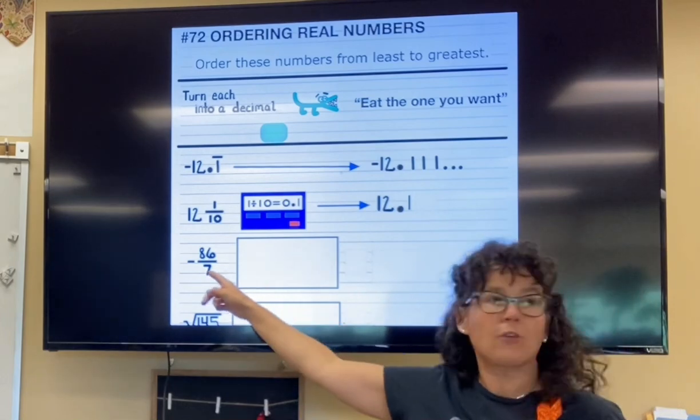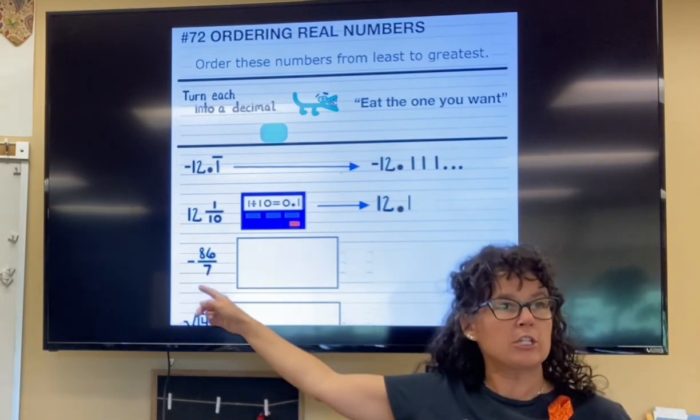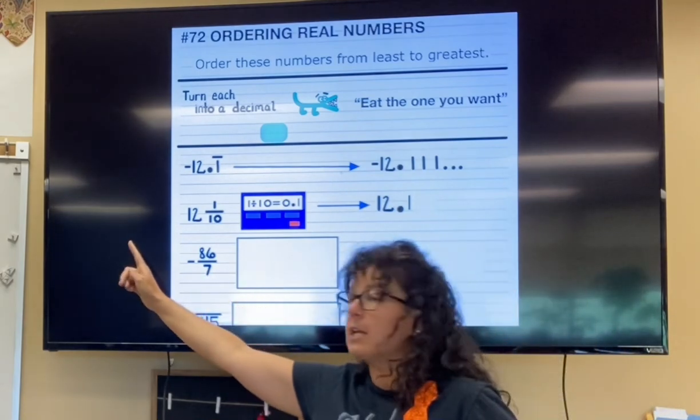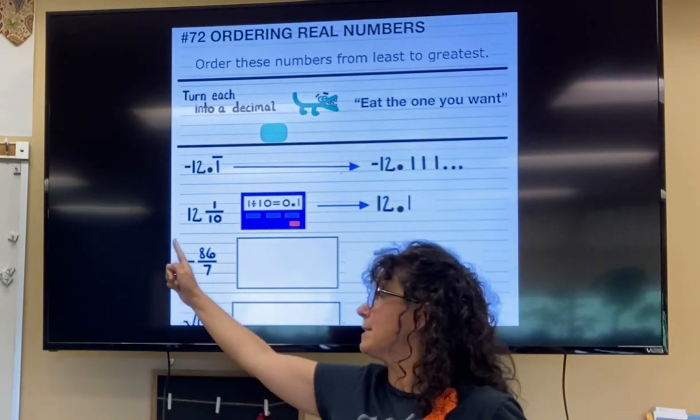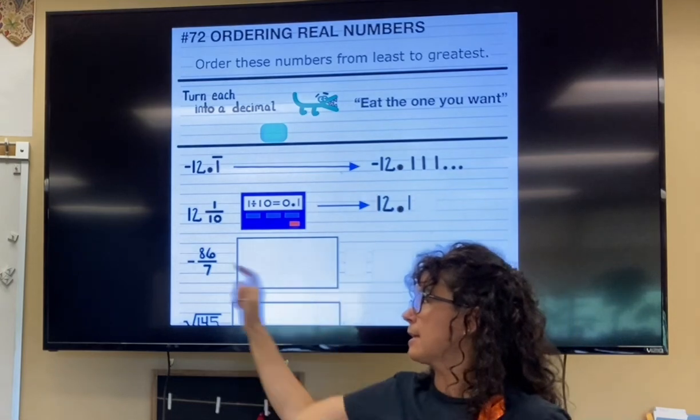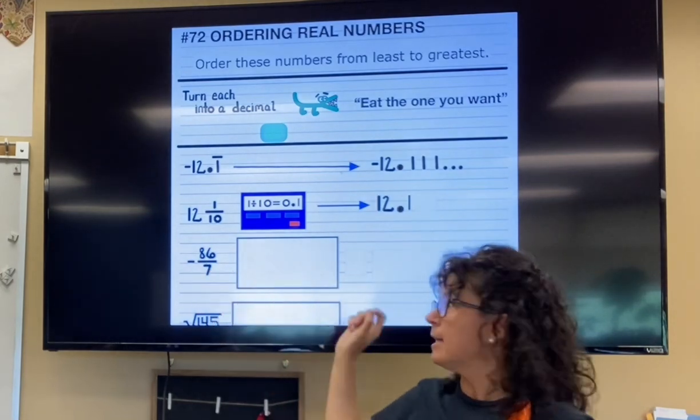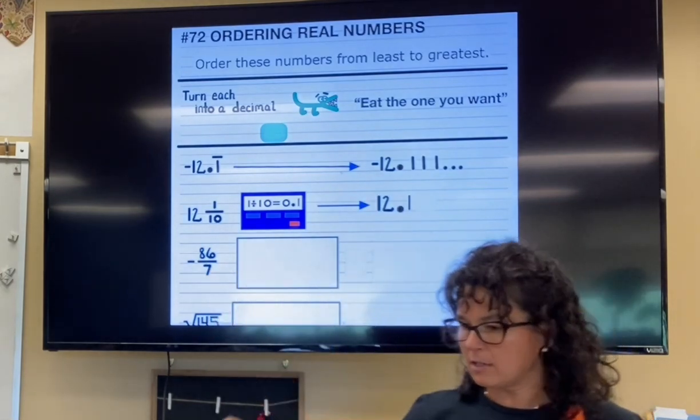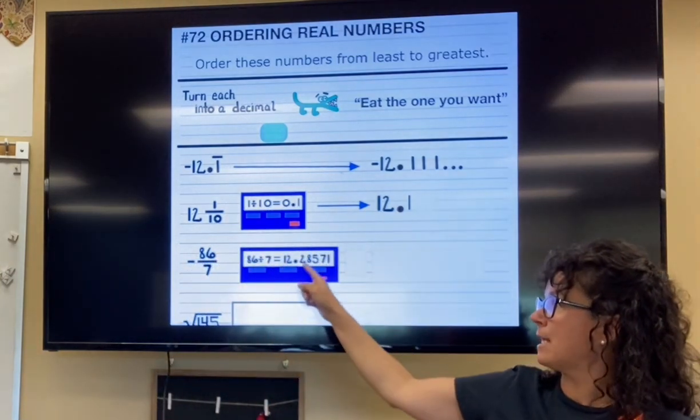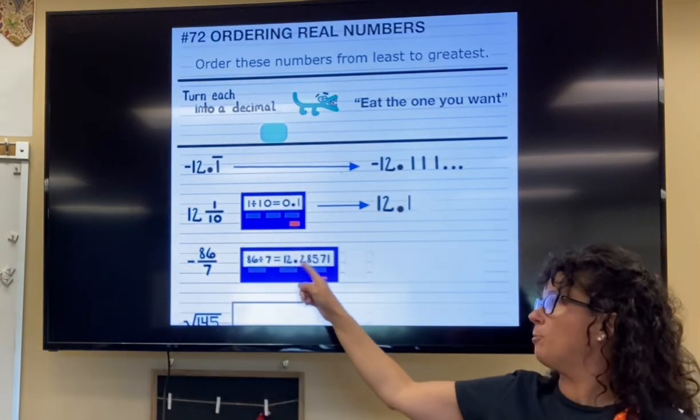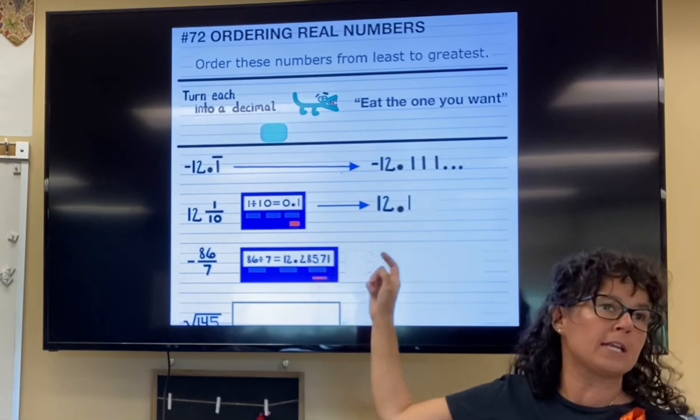Then this fraction here, changing it to a decimal, reading it from left to right and working your way down, we have, it's a negative, but it's 86, next line, divided by, next line, 7. So if you type in 86 divided by 7, your calculator says 12.28571 and it keeps going.